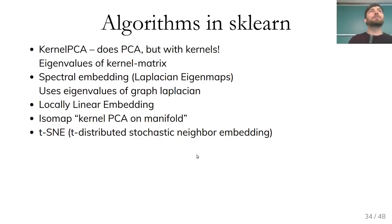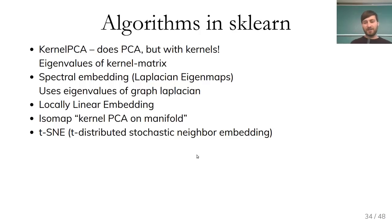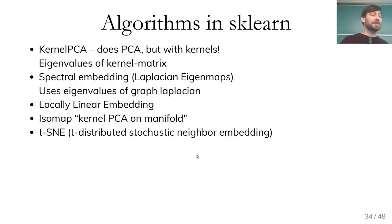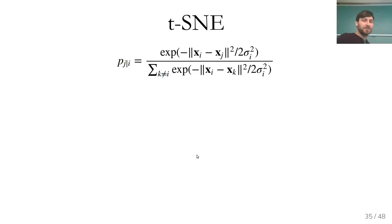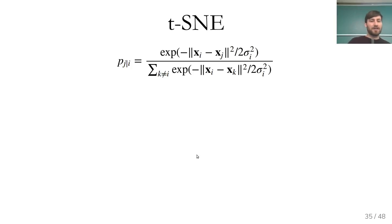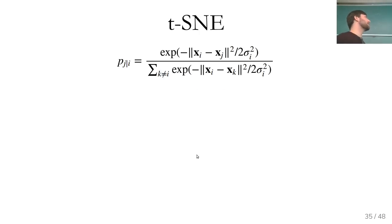Since t-SNE is by far the most commonly used, I want to go through it in a little more detail. t-SNE stands for t-Stochastic Neighbor Embedding. It uses two probability distributions between neighbors: one is a Gaussian in the original space, and the other is a Student t-distribution in the embedding space.